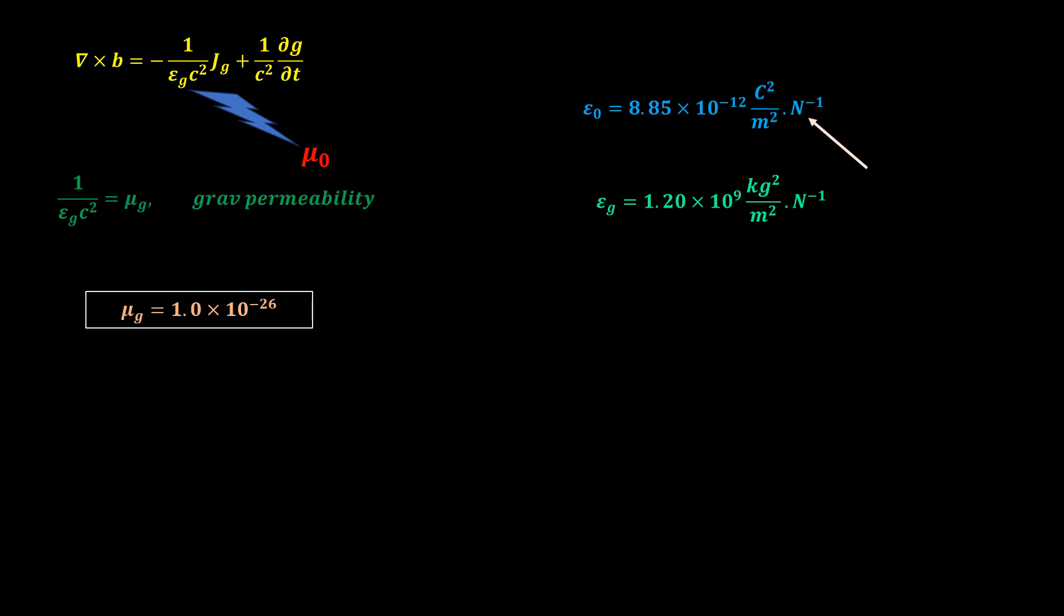Since permittivity is defined as the extent to which a material impedes the flow of a field, we see that we need an extremely large mass density of about 1.2 billion to shield the gravitational field, in contrast to the extremely small charge density of just about a ninth of a trillion. This is why we have not been able to witness the complete shielding of gravitational fields, but have witnessed the shielding of electric fields.